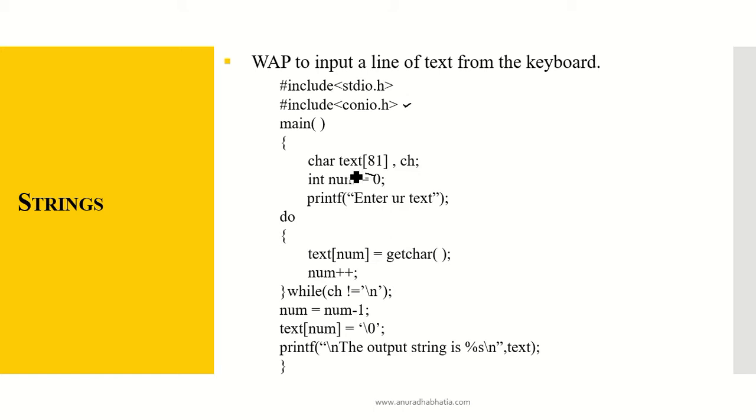So my text is an array of the size 81 of the type character. Ch is another variable of the type character. Integer num equals zero. Enter your text. Now this text is due. The complete text is entered till the character is not equal to zero. So here I am going to enter the total number and then put the output string also.